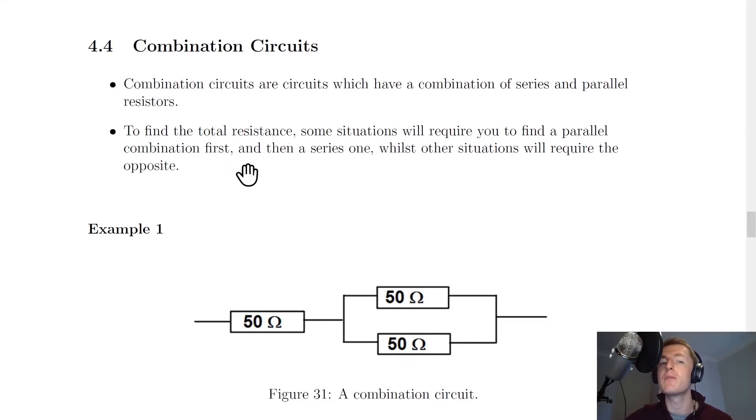To find the total resistance, some situations will require you to find a parallel combination first and then a series one, whilst other situations will require the opposite. And here's a couple of examples just to give you an idea.